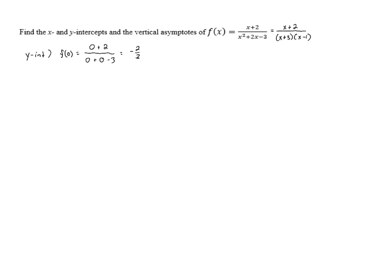Once we've factored, we can find the x-intercepts and vertical asymptotes relatively easily. The x-intercepts occur when the function equals 0, which happens when the numerator equals 0. So we need x+2 to equal 0. This occurs when x equals negative 2. So our x-intercept is x = -2, and the y-intercept is y = -2/3.